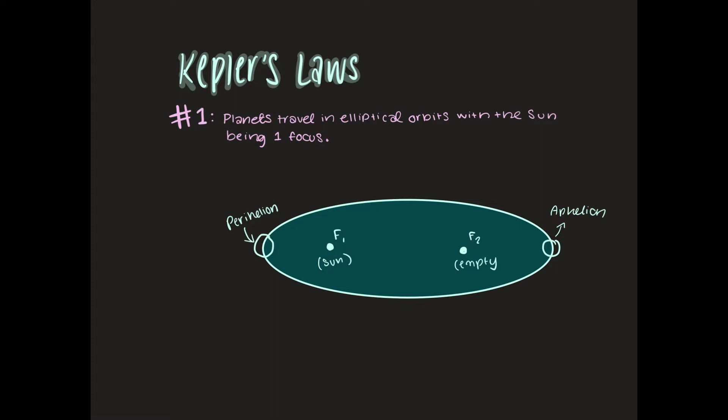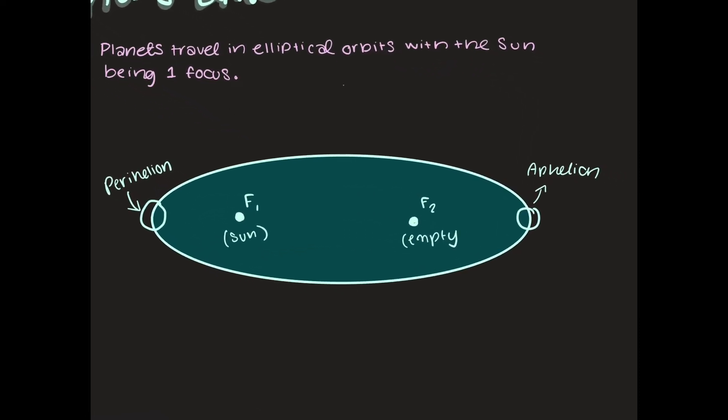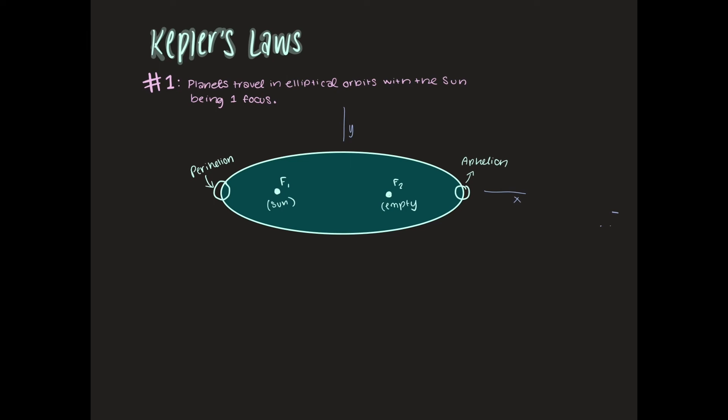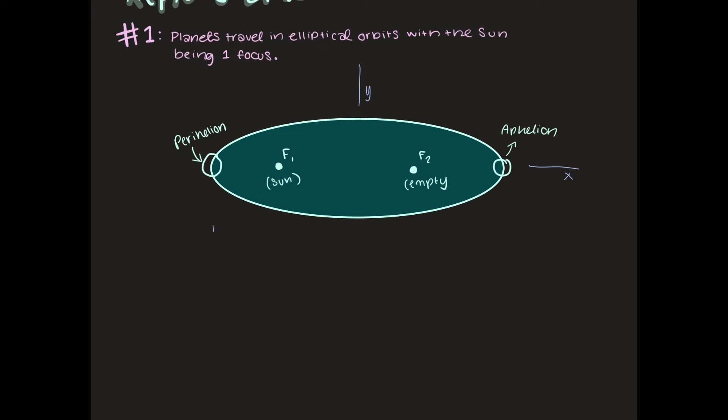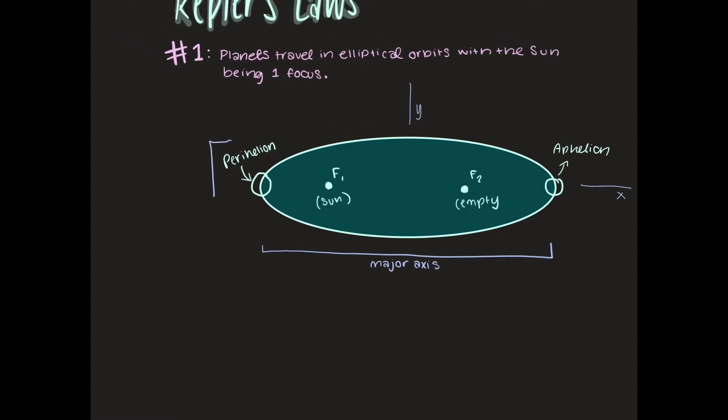This diagram still has much more within it to be labeled but first we should reference our axes. We can call this y and then this is x. Within our actual orbit, within the ellipse of our orbit, we have a major axis and then a minor axis. We can call this our major axis which stretches from perihelion to aphelion and then from the top of our ellipse to the bottom of our ellipse we have our minor axis.